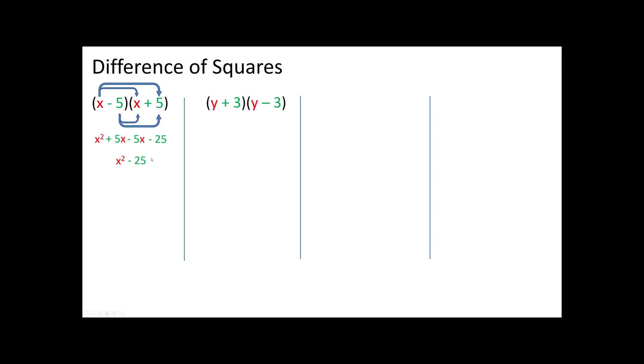Now if we learn to recognize this we're eventually going to be able to skip this middle step and jump straight to the end. Let's do another one of these. Notice again the first term in each set of parentheses is the same. The last term in each set of parentheses is the same. The only thing that's different is the sign in the middle.